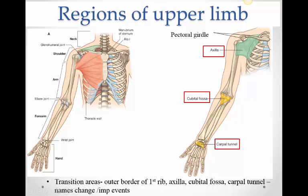The transition zones are: first, the outer border of the first rib, where the subclavian artery becomes the axillary artery. Second, in the axilla, there are important structures; at the lower border of the axilla there is another name change where the axillary artery becomes the brachial artery. Then in the cubital fossa, very important structures lie there and the artery divides. Finally, structures pass through the carpal tunnel to get into the hand. These are areas you must pay key attention to.